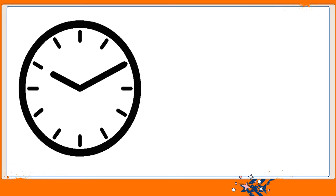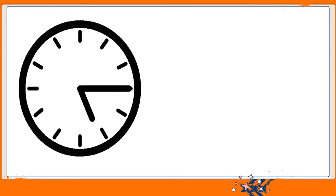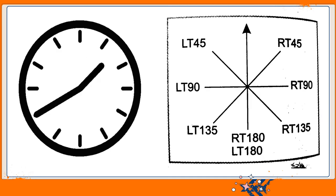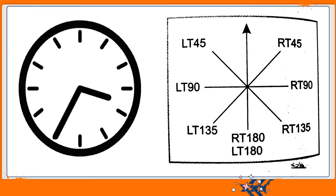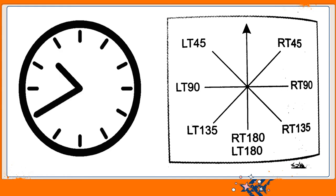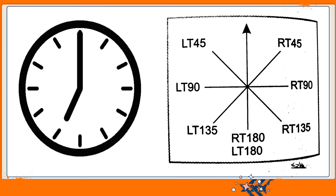Now, how do we know how many degrees to turn? Have you ever seen a clock moving? It always moves in the clockwise direction, which is the right-hand side direction. Similarly, when the turtle moves to the right-hand side, we use the rt command. When the turtle is moving slightly, we write rt 45, and for other angles similarly. When the turtle moves towards the left-hand side, we use the lt command instead of rt.